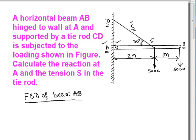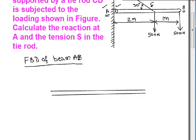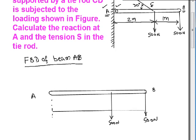So we have the beam AB here. Drawing the free body diagram: you have the beam AB with end A on the left and end B on the right. There are two downward forces — one at 2 meters from A and one at 3 meters from A — both equal to 500 Newtons. The distance from the first force to A is 2 meters, and from the first force to the second force is 1 meter.